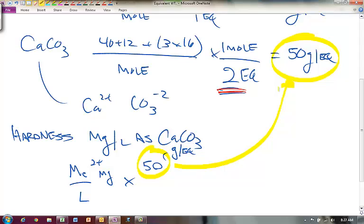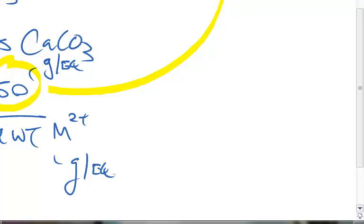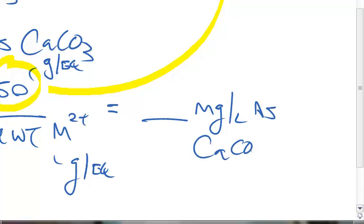That's our conversion. And then we would divide by equivalent weight of the divalent cation. And so this would be grams and grams per equivalent as well. And so that would give us, if we multiply these out, some concentration in milligrams per liter as CaCO3. Perfect.